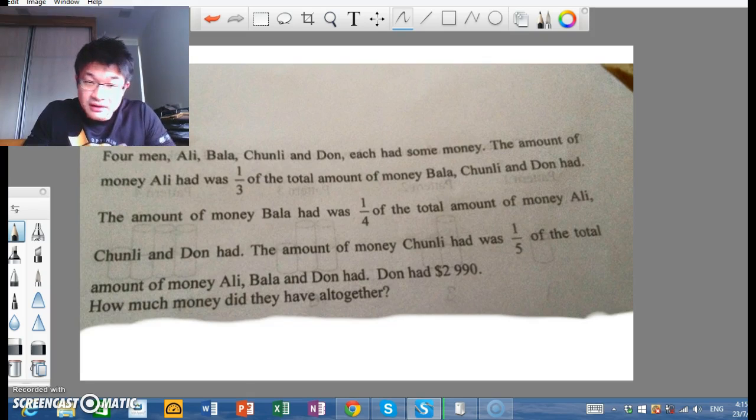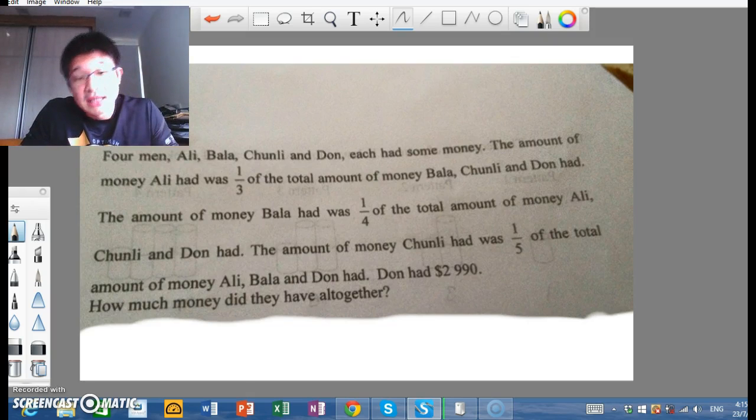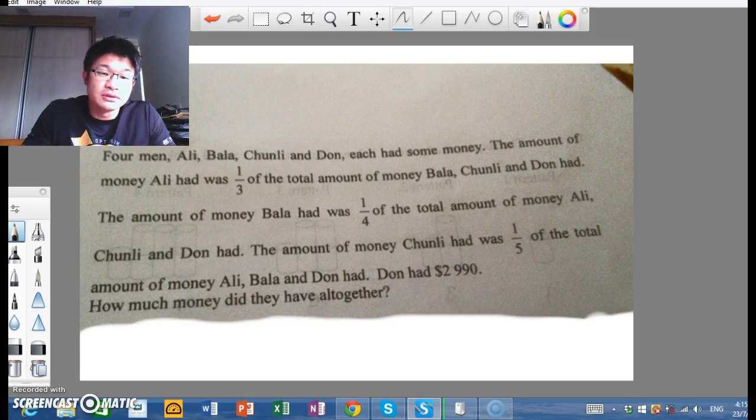Four men, Ali, Bala, Chunli and Don, each had some money. The amount of money Ali had was one-third the amount of money Bala, Chunli, and Don had. The amount of money Bala had was one-quarter of the amount of money Ali, Chunli, and Don had.